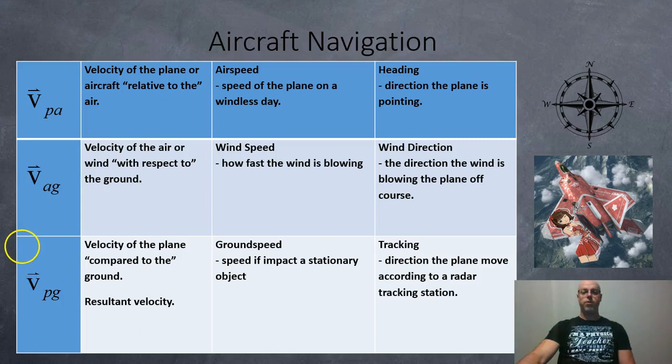So a few things you should know. First of all, the velocity of the plane relative to the air, so this is the airspeed of the plane. How fast would the plane go on a windless day or what would the air tunnel testing be? Heading, the direction the plane is pointing. So which way is the pilot pointing the plane, ignoring the wind?